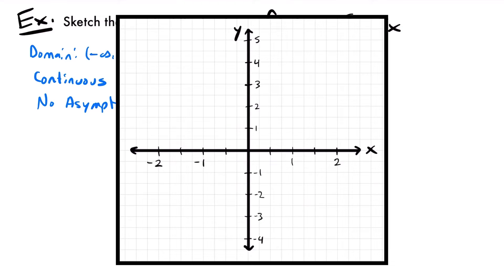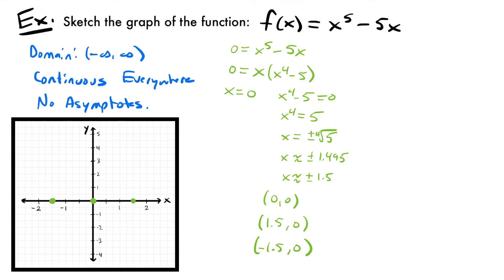Let's go ahead and plot those on our graph. One x-intercept is at the origin (0, 0), and the other two are at approximately 1.5 and negative 1.5. Now for the y-intercept, we plug zero into our function: y equals zero to the fifth power minus five times zero, which equals zero. So our only y-intercept is at (0, 0) — which is also one of our x-intercepts, so we didn't gain any new point. With that, we're done with the algebra aspects of sketching the graph, and we'll move on into our calculus concepts — taking the first and second derivatives.